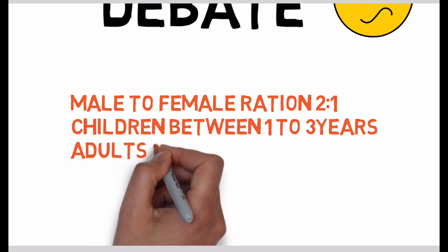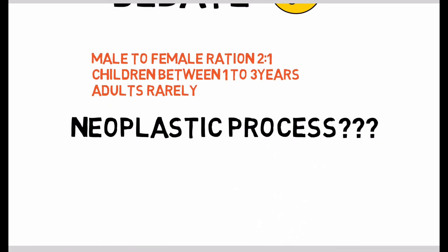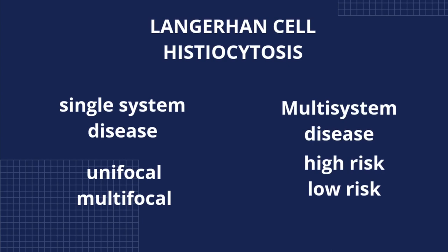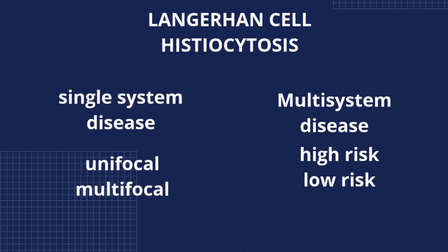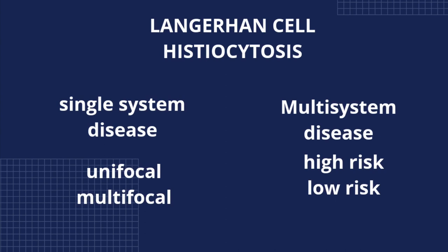This clonal proliferation and BRAF V600E mutation definitely makes us think: is Langerhans cell histiocytosis a neoplastic process? The answer is yes — it is a neoplasm, but not necessarily a malignancy. When these clone of cells migrate and affect different body sites, patients can develop single-system involvement or multi-system involvement. Single-system involvement can further be classified as unifocal and multifocal, and multi-system disease can be classified as high risk and low risk. This classification is very important in understanding the prognosis of the patient and deciding the treatment.